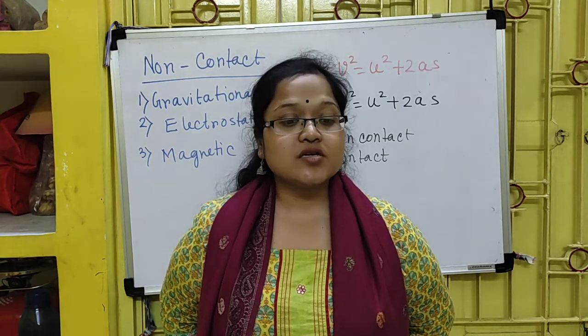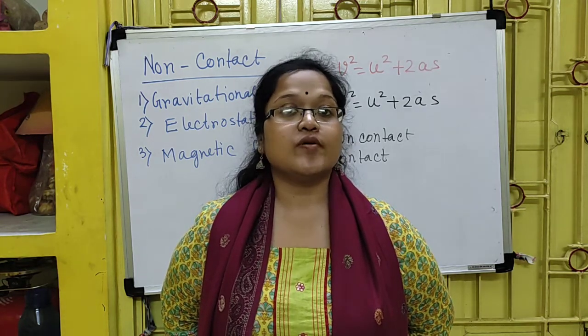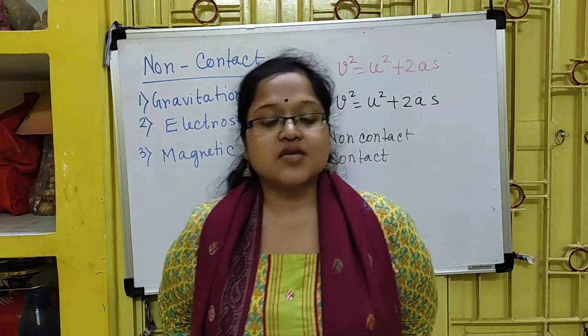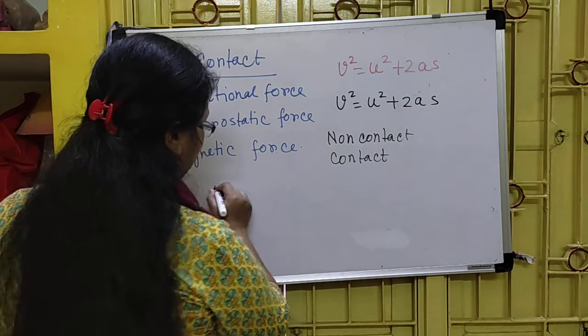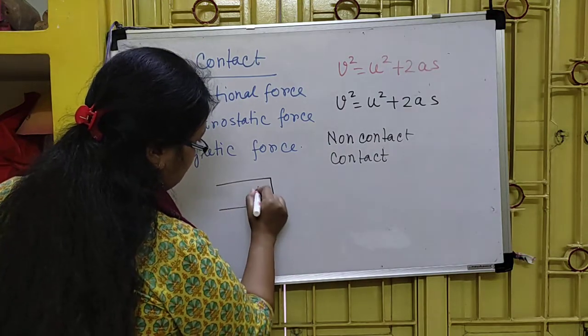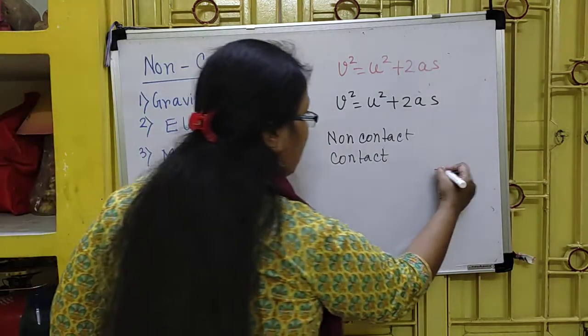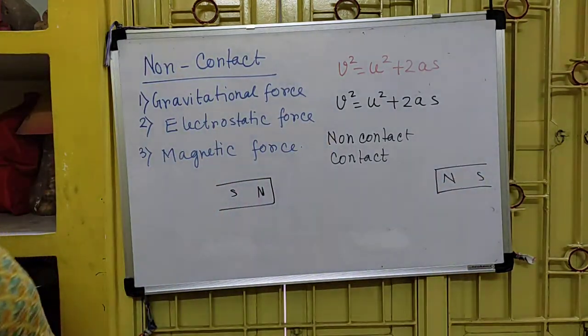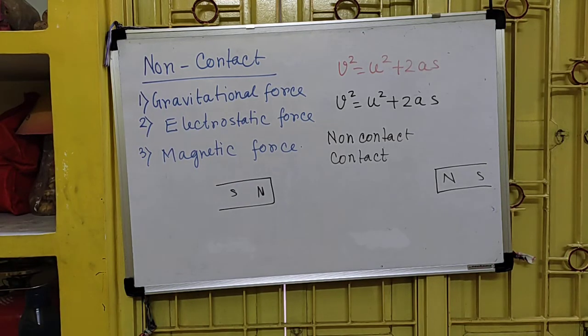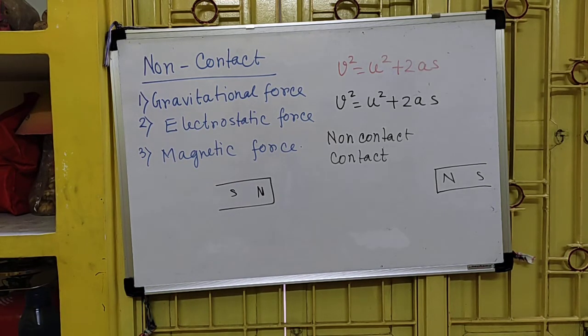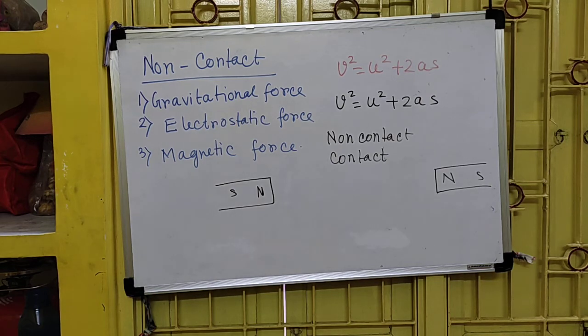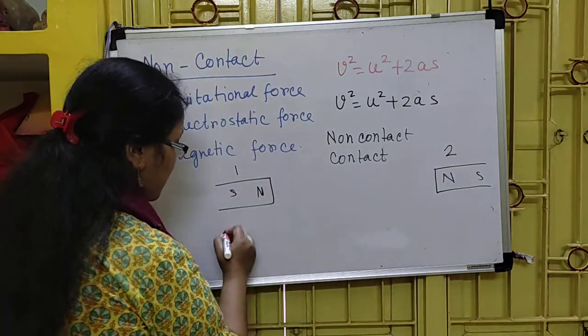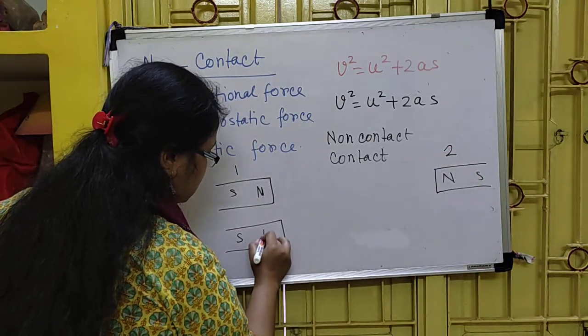But how much will be the strength, how much will be the attraction or how much will be repulsion - that will clearly depend on what is the distance. Suppose here I am having a magnet, this side north, this side south. And here I am having a magnet, this side north, this side south. So obviously the two poles will repel each other. Now the force of repulsion for this distance will be something. Now if I am keeping - suppose this is the first magnet, this is my second magnet. Now if the second magnet comes very close to the first magnet, this is situation two.